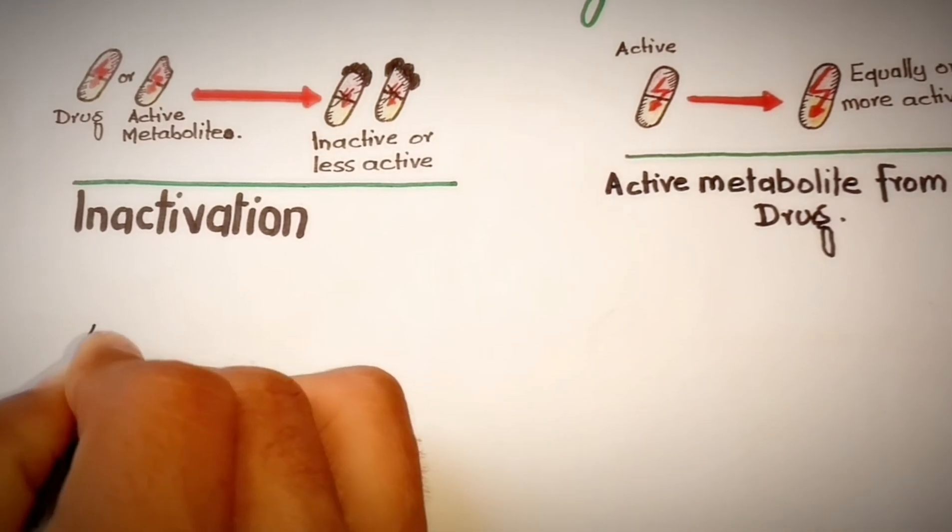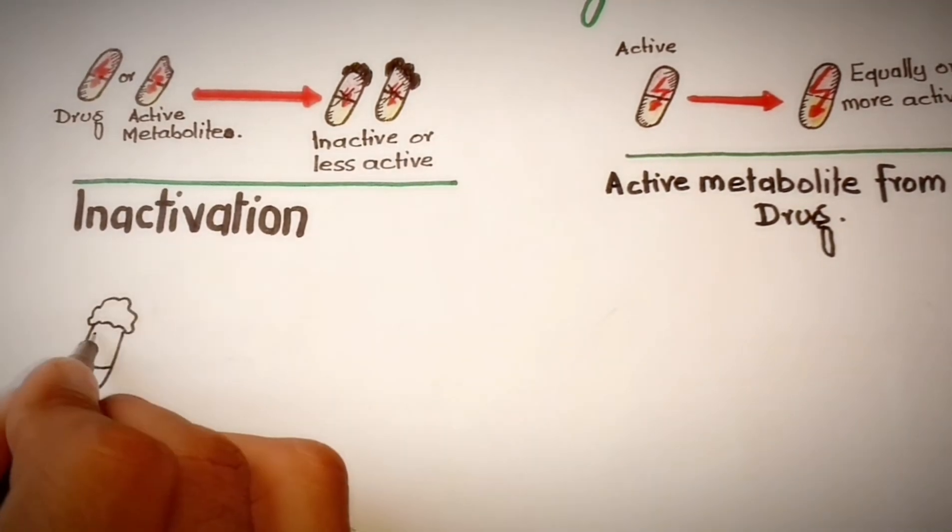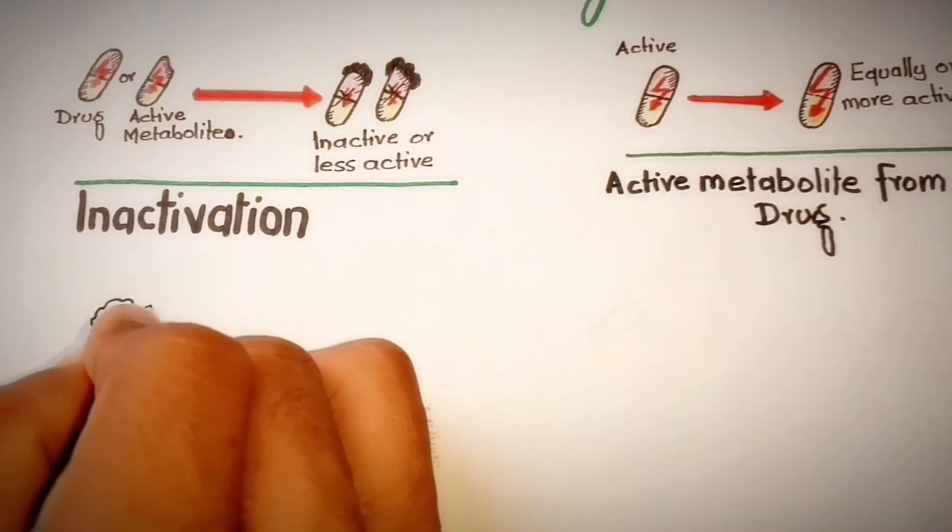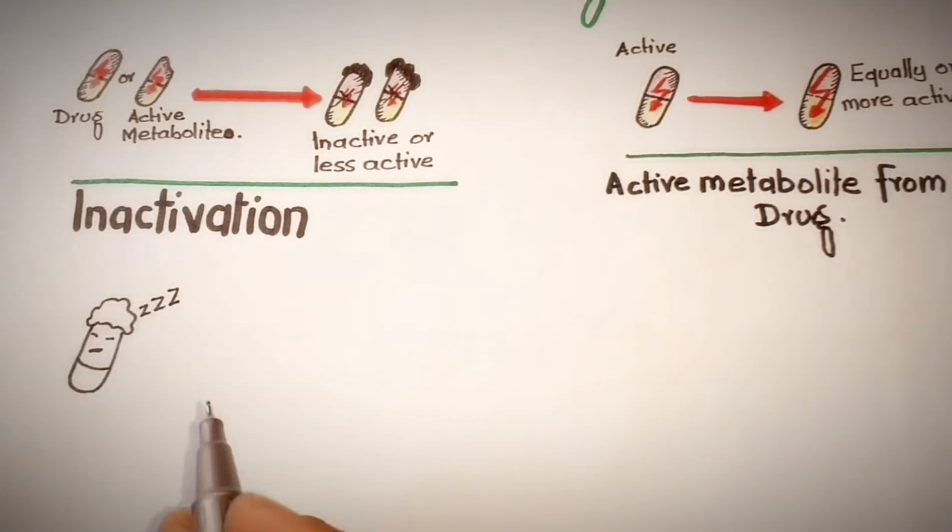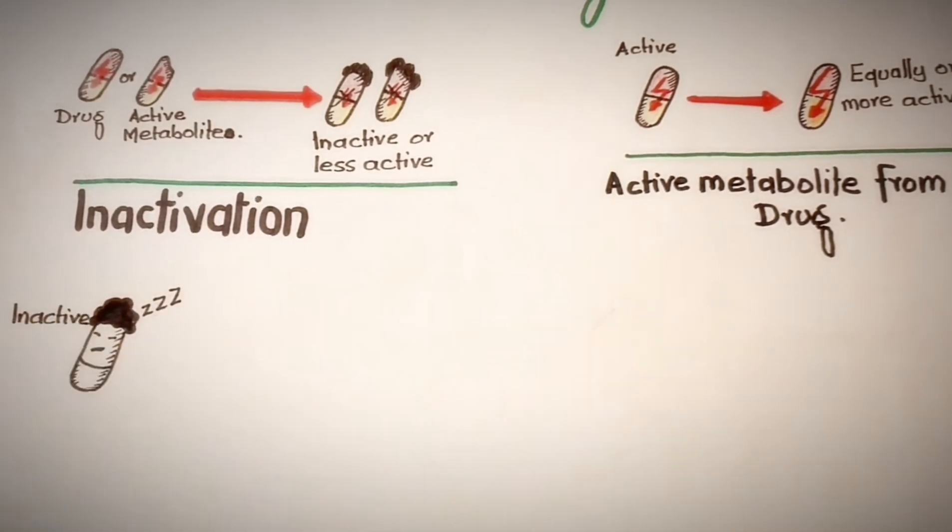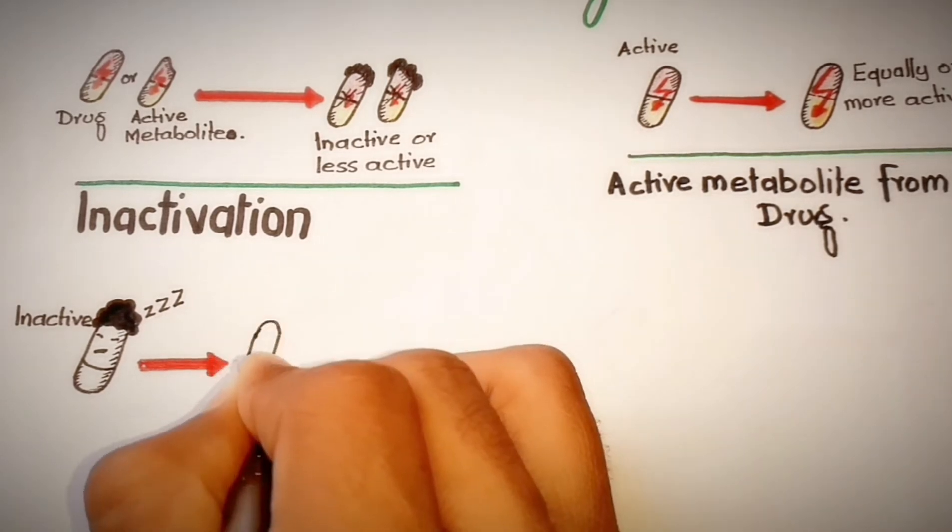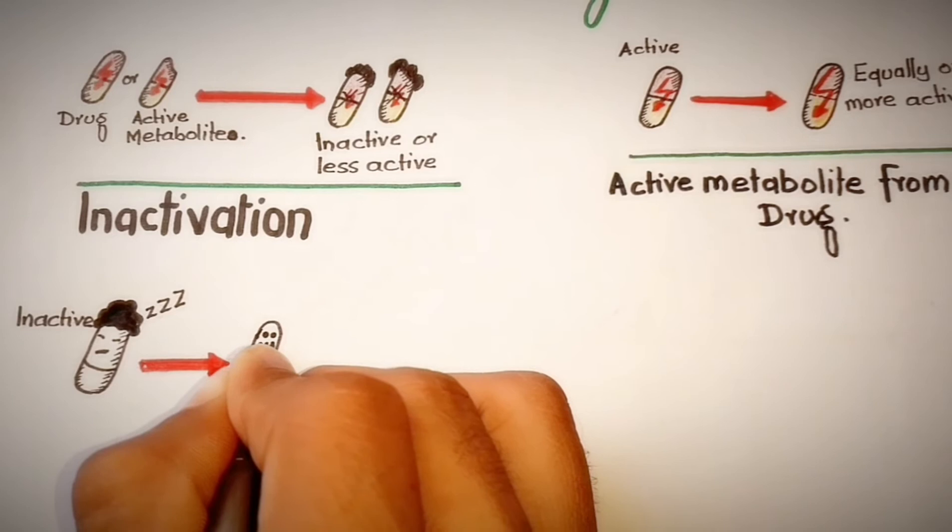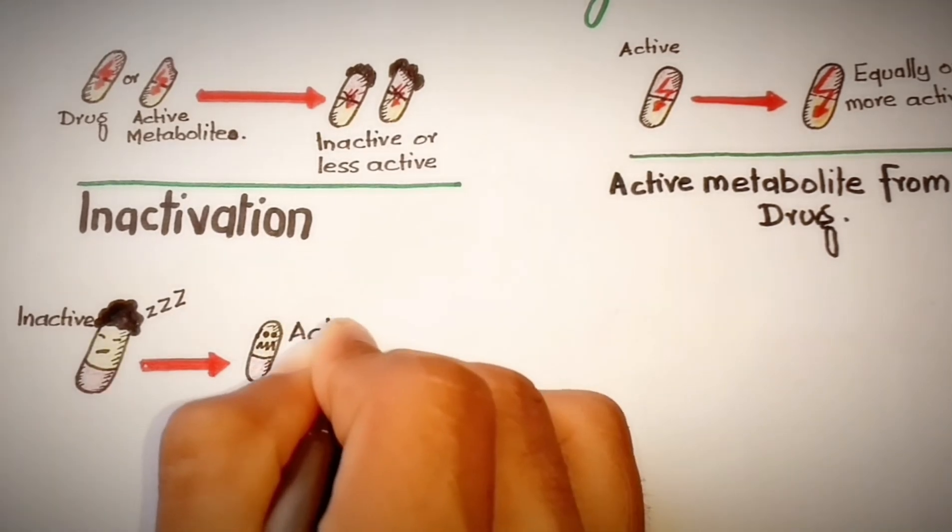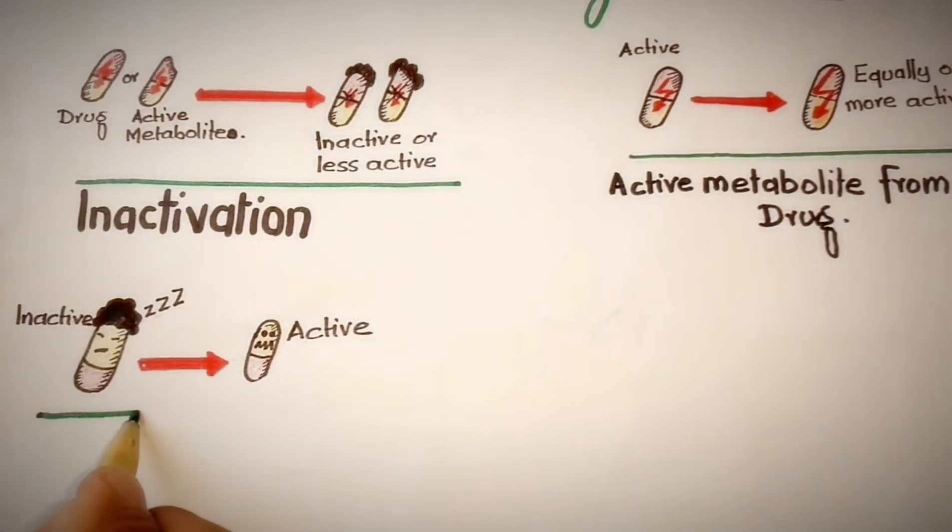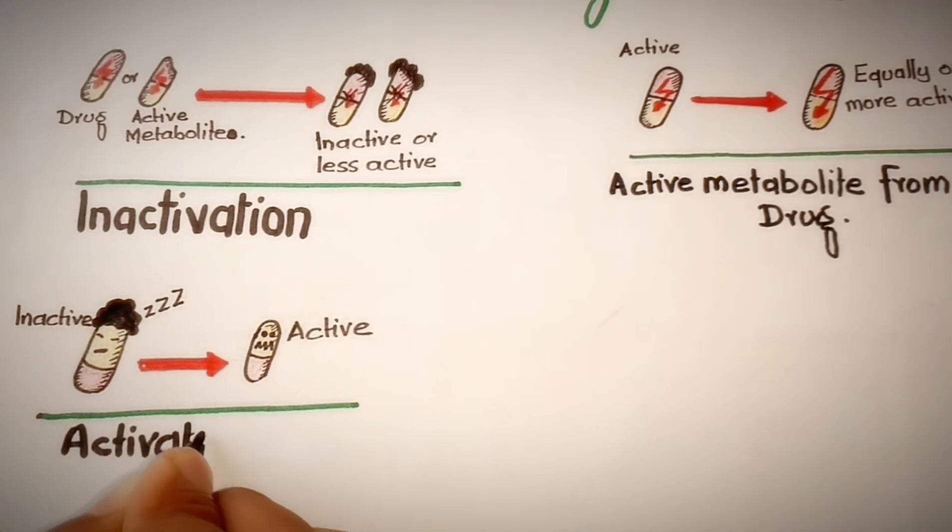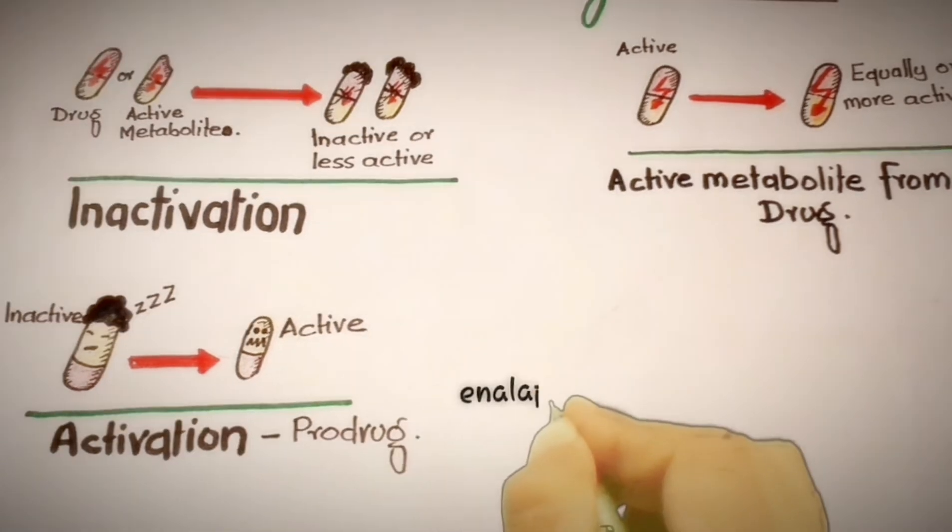Third is activation of inactive drugs, also known as bioactivation. Pure drugs are inactive as such and need conversion in the body to one or more active metabolites. Such a drug is called a prodrug, for example enalapril is converted to enalaprilat and levodopa to dopamine inside the body.